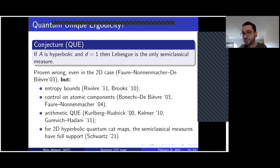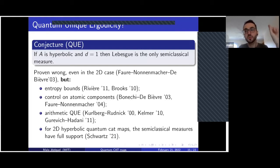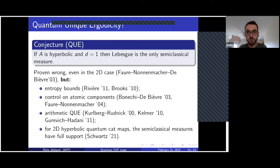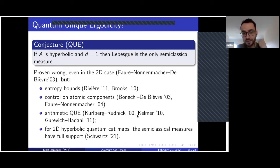One way to solve this issue is to introduce Hecke operators, constructed by number theoretic considerations — operators that commute with the quantum cat map. Instead of looking at eigenstates of the quantum cat map alone, you look at joint eigenstates of the quantum cat map and the Hecke operators. You remove a lot of spectral degeneracy and kill a lot of multiplicity. Restricting to these joint eigenstates, you can recover quantum unique ergodicity — the only semi-classical measure constructed using joint eigenstates is Lebesgue measure.